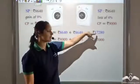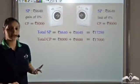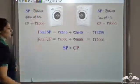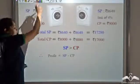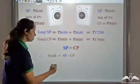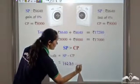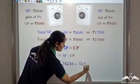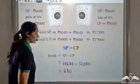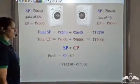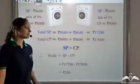Since selling price is greater than cost price, we say it is a gain. SP is greater than CP, so there is a gain or profit, and that is equal to SP minus CP. SP is 17280 minus cost price 17000, which gives us a profit of ₹280.